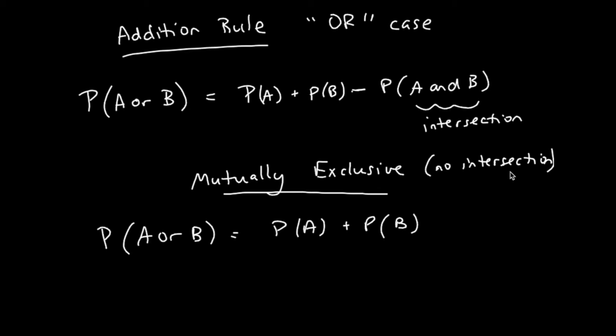Using a deck of cards: if I pick a king or a queen, I can't get both at the same time with one card — those two events are mutually exclusive. But if I want a king or a diamond, there is one card that is the king of diamonds, so there is an intersection between the two — that's a non-mutually exclusive case. I'll show an example of each.